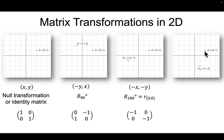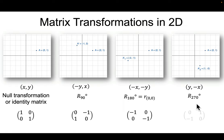For a 270-degree counterclockwise rotation — equivalently, 90 degrees clockwise — (x, y) becomes (y, -x). Our example point (2, 1) becomes (1, -2). The matrix that accomplishes this: if you multiply it by (x, y), you get the point (y, -x). That's the idea of each of these.